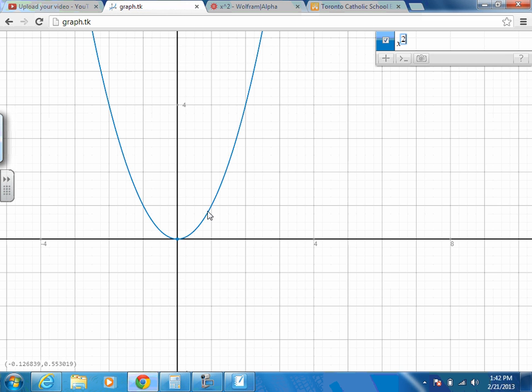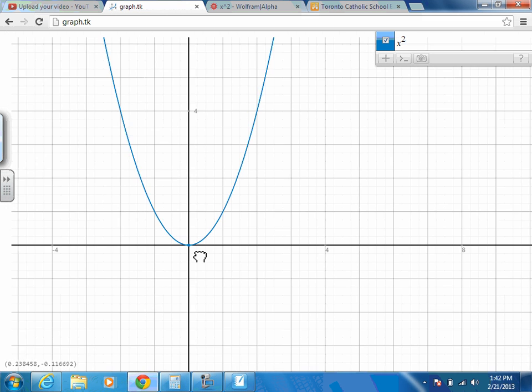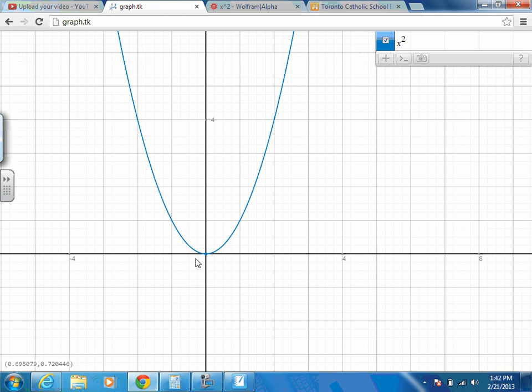This is what our normal parabola looks like, if you guys recall. The vertex is at zero, we go over one squared, over one squared, over two, up four. You may not remember that, we're going to get into how to graph that specifically, but today I want us to just focus on the patterns.